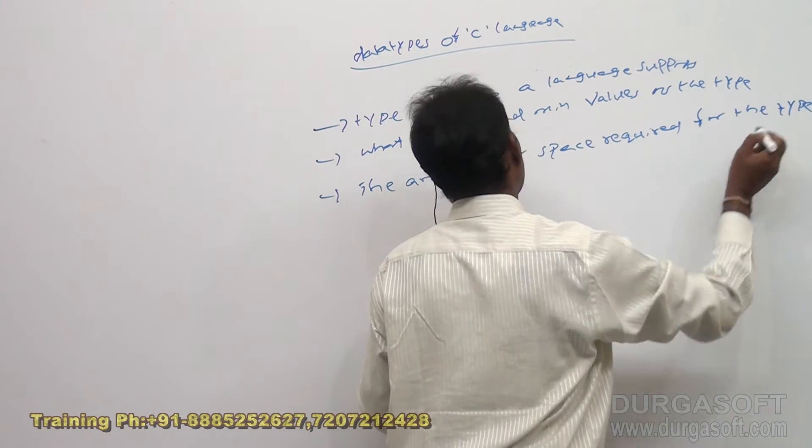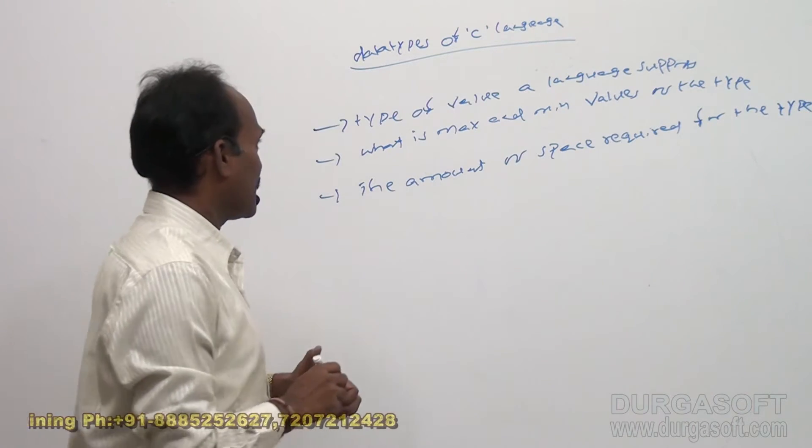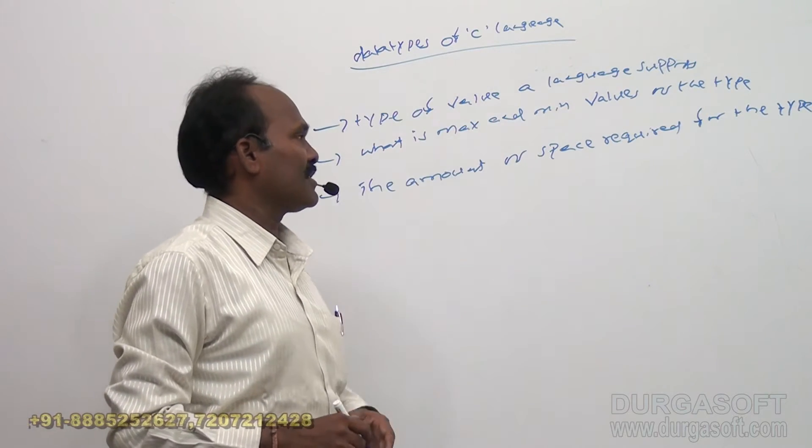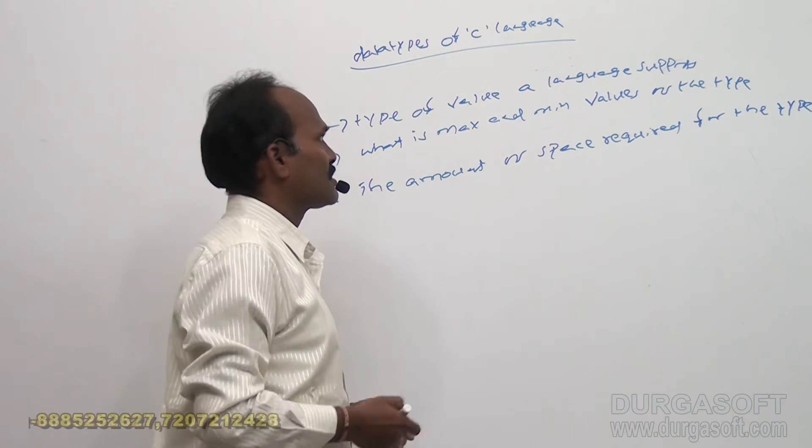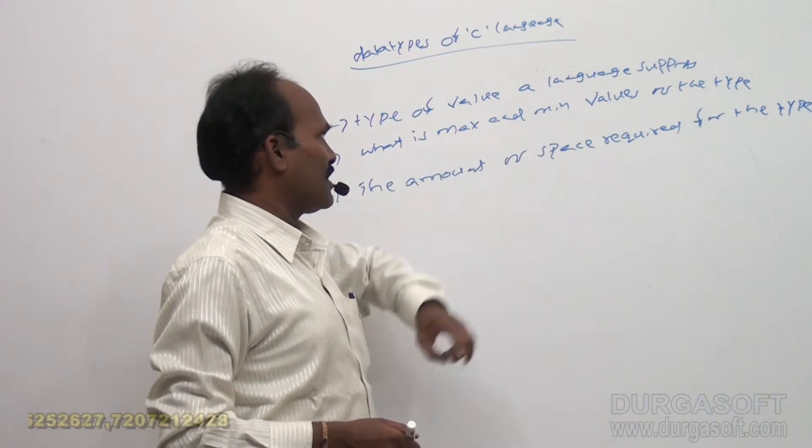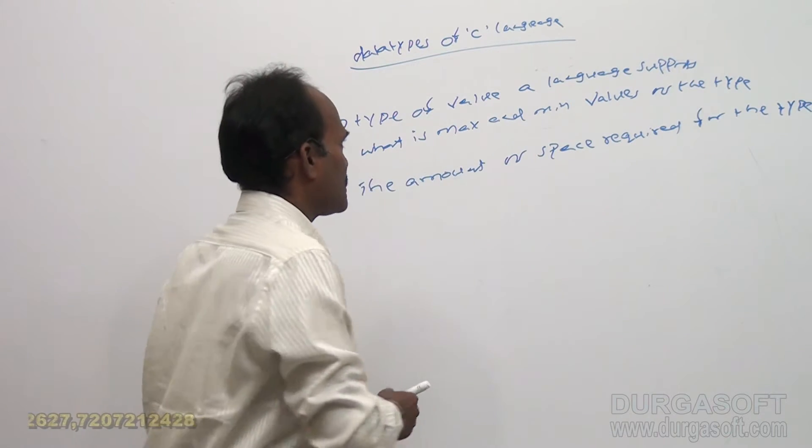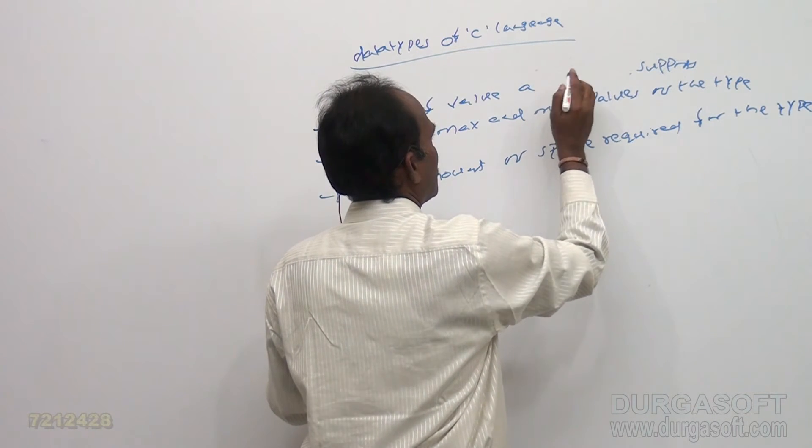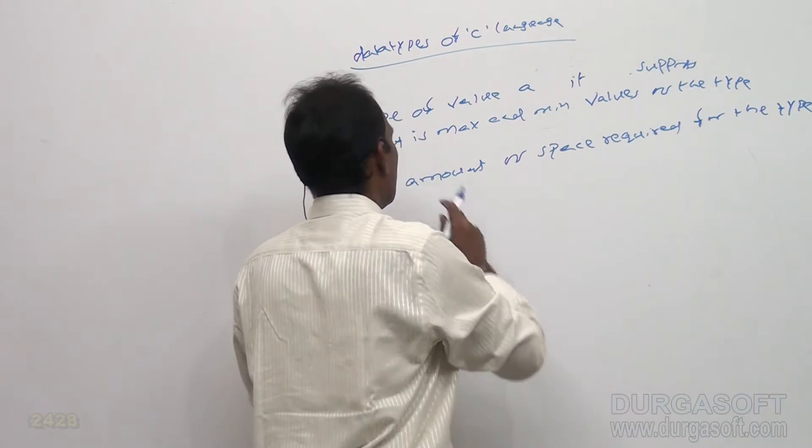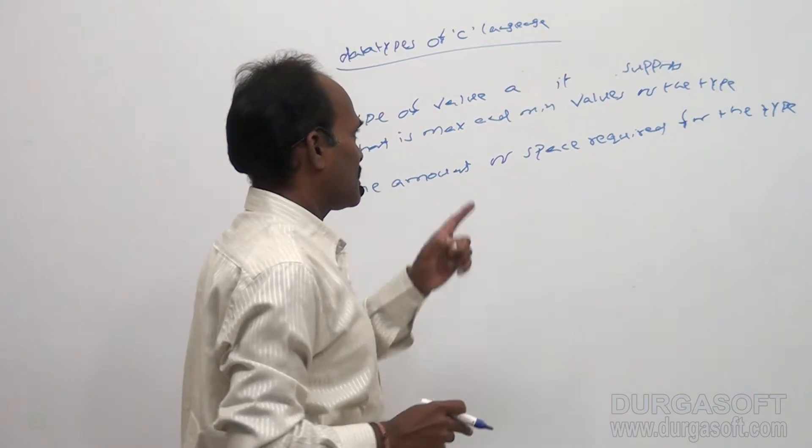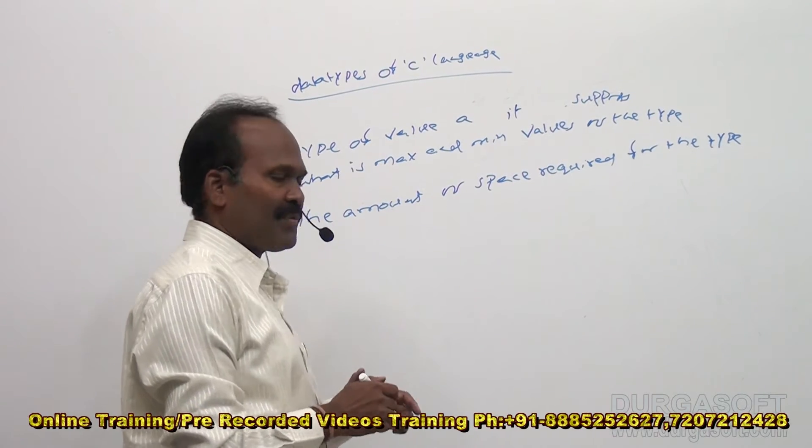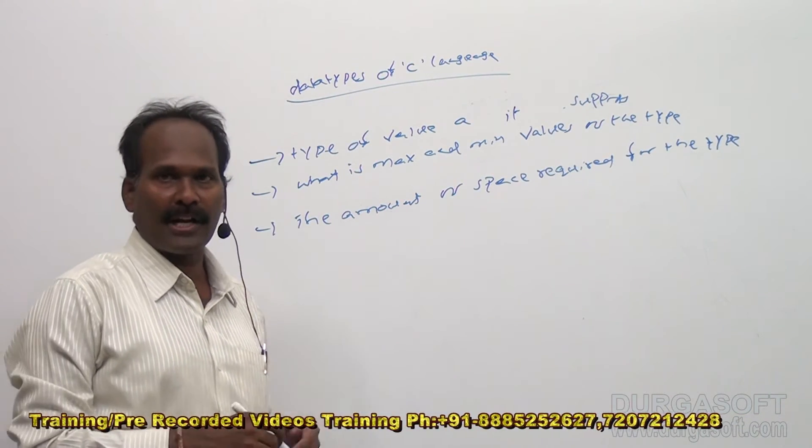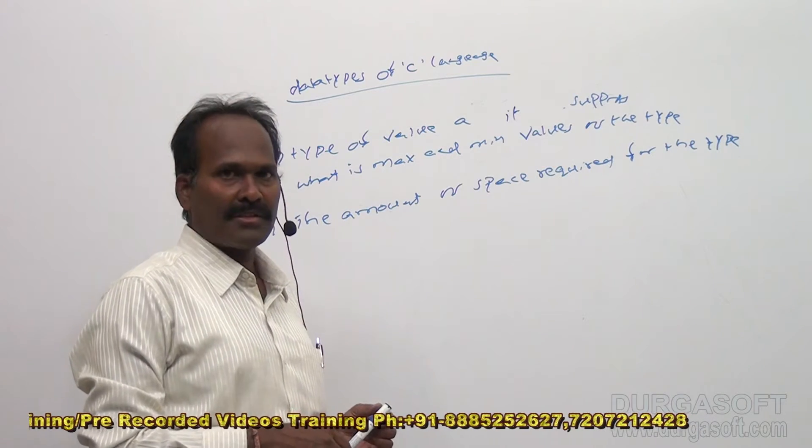First one, once again I will explain, just you look at the points. So the data type is going to describe the type of value a language, a language means the type supports, and what is the max and minimum values of the type. So instead of language you can specify a type, type of value it supports. Okay, so what is the max and minimum values of the type, and how much memory is required for the type. So these three properties are described by data type of a language. So as far as the C language is concerned, here we are going to have like.